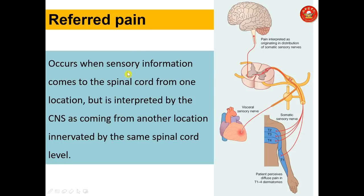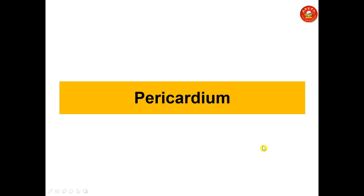Referred pain occurs when sensory information from the spinal cord from one location is interpreted by the central nervous system as coming from another location. The visceral sensory nerve takes the message to the brain, and the patient experiences diffuse pain in the T1 to T4 dermatomes on the left side.